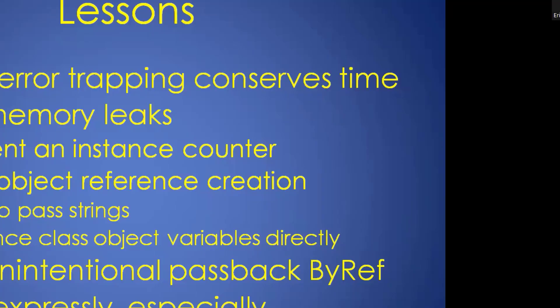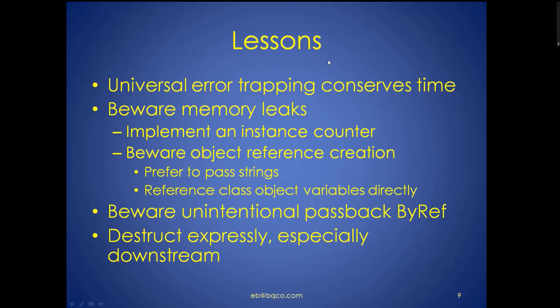Lessons learned: universal error trapping conserves time, but you can end up with persistent object references very easily. It's best to destruct those references very consciously. It's also very helpful to always remember that object references are passed by reference by default in VBA, and to recognize there's quite a potential for an unintentional passback error. That's one of the reasons why I'm passing as few objects back and forth as possible — if I don't have to, I'll try to pass a string instead, because those go out of scope every time, but object references don't necessarily.